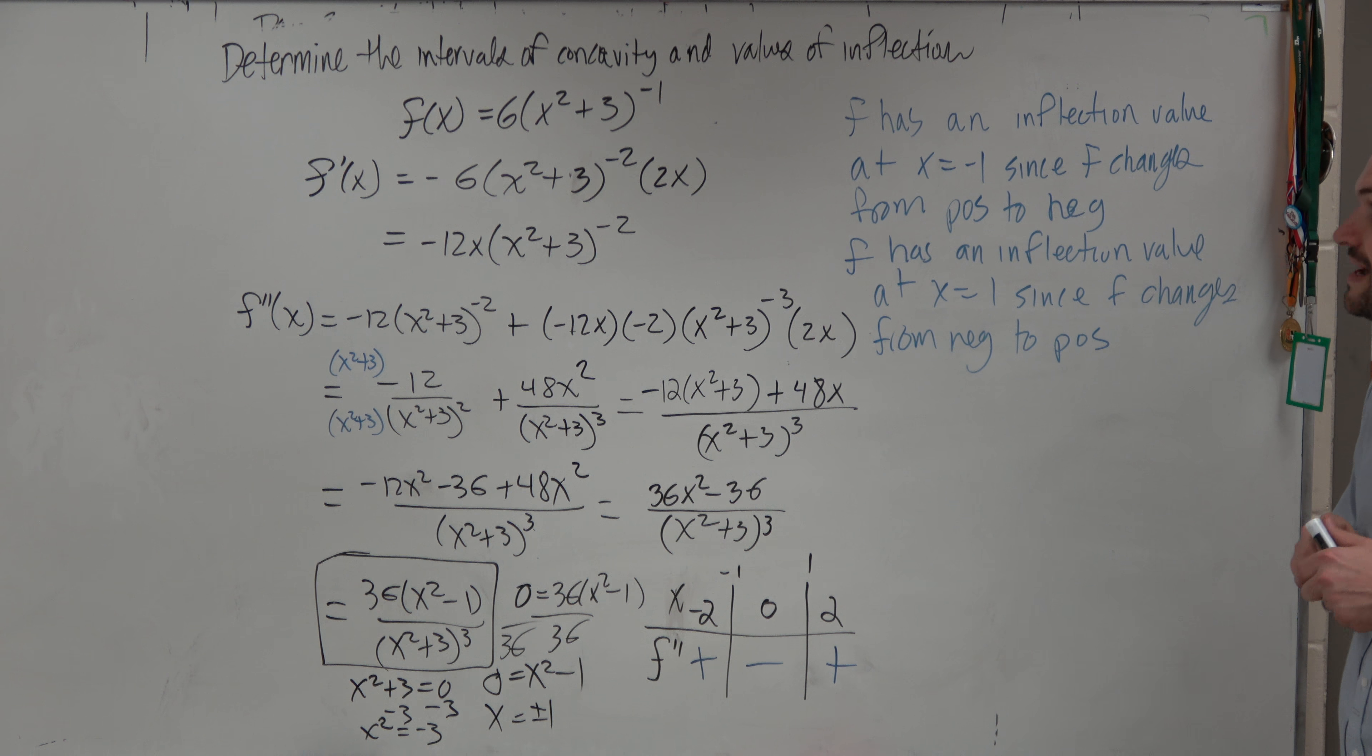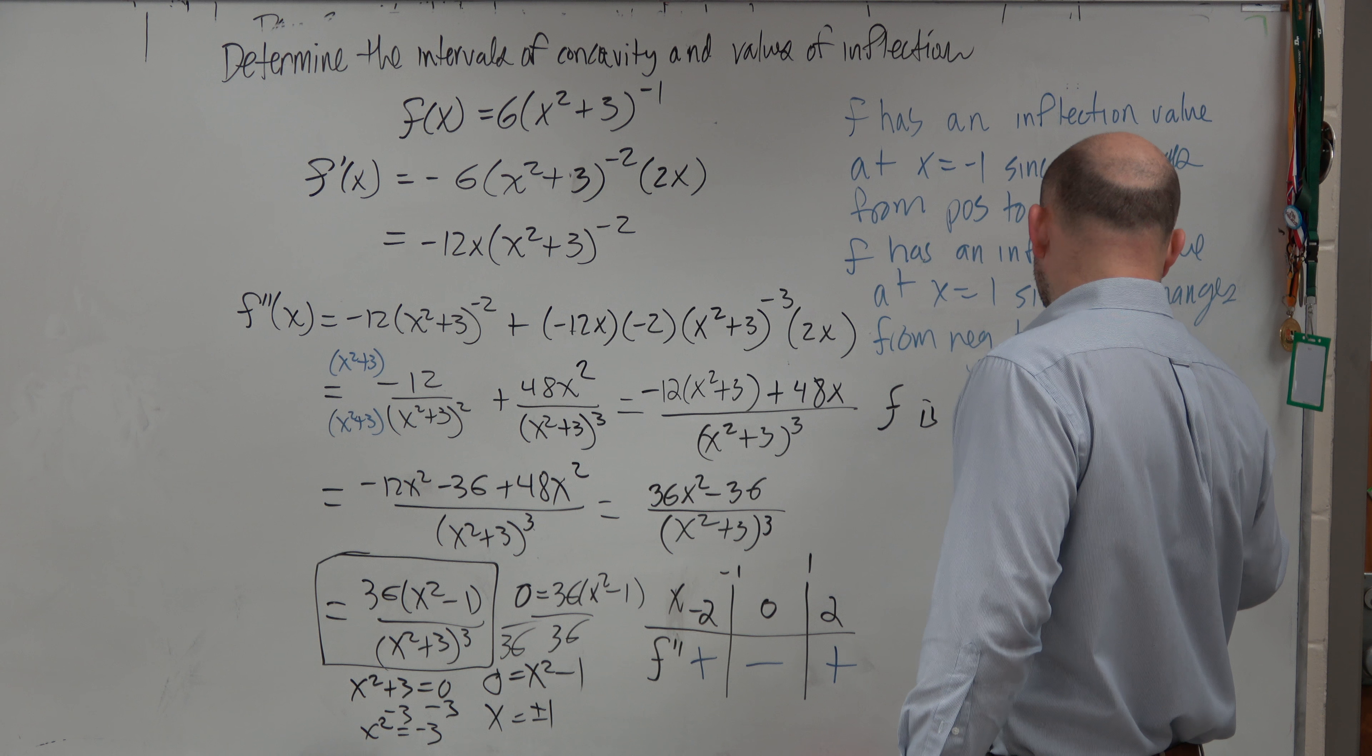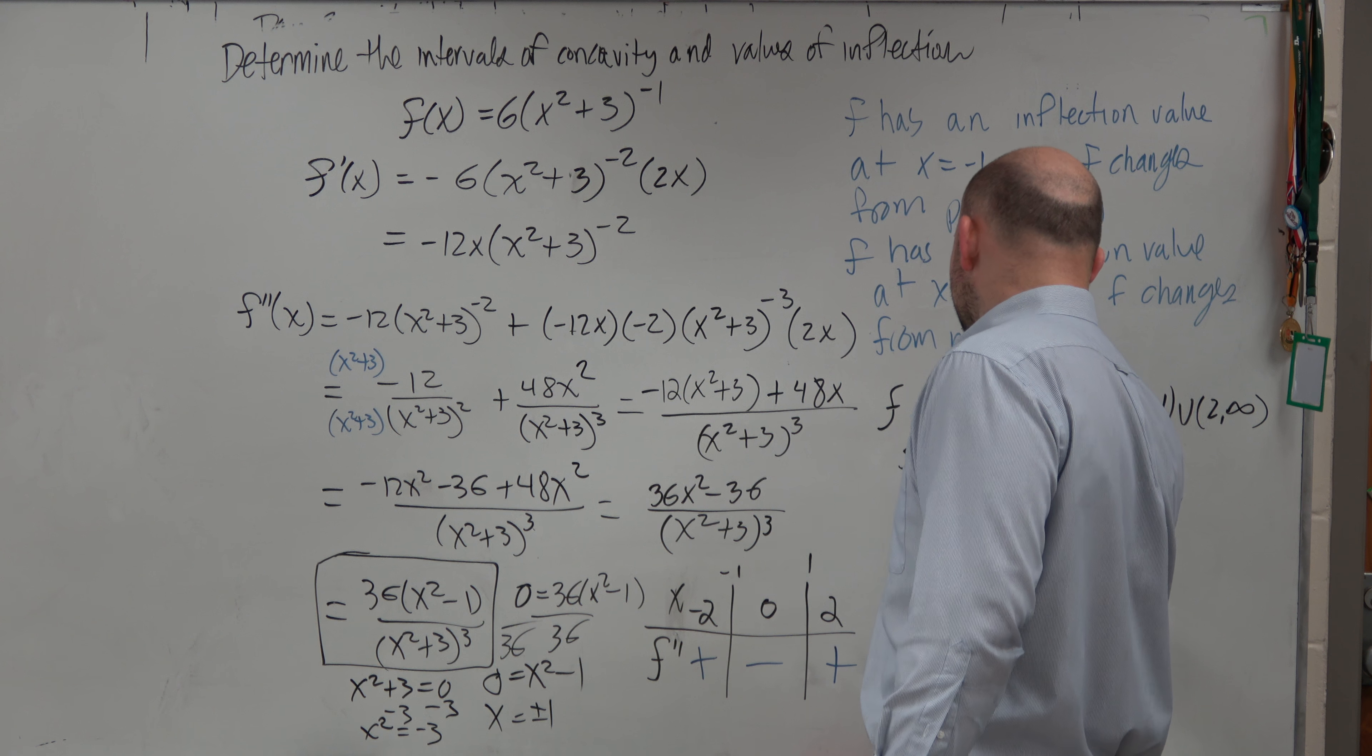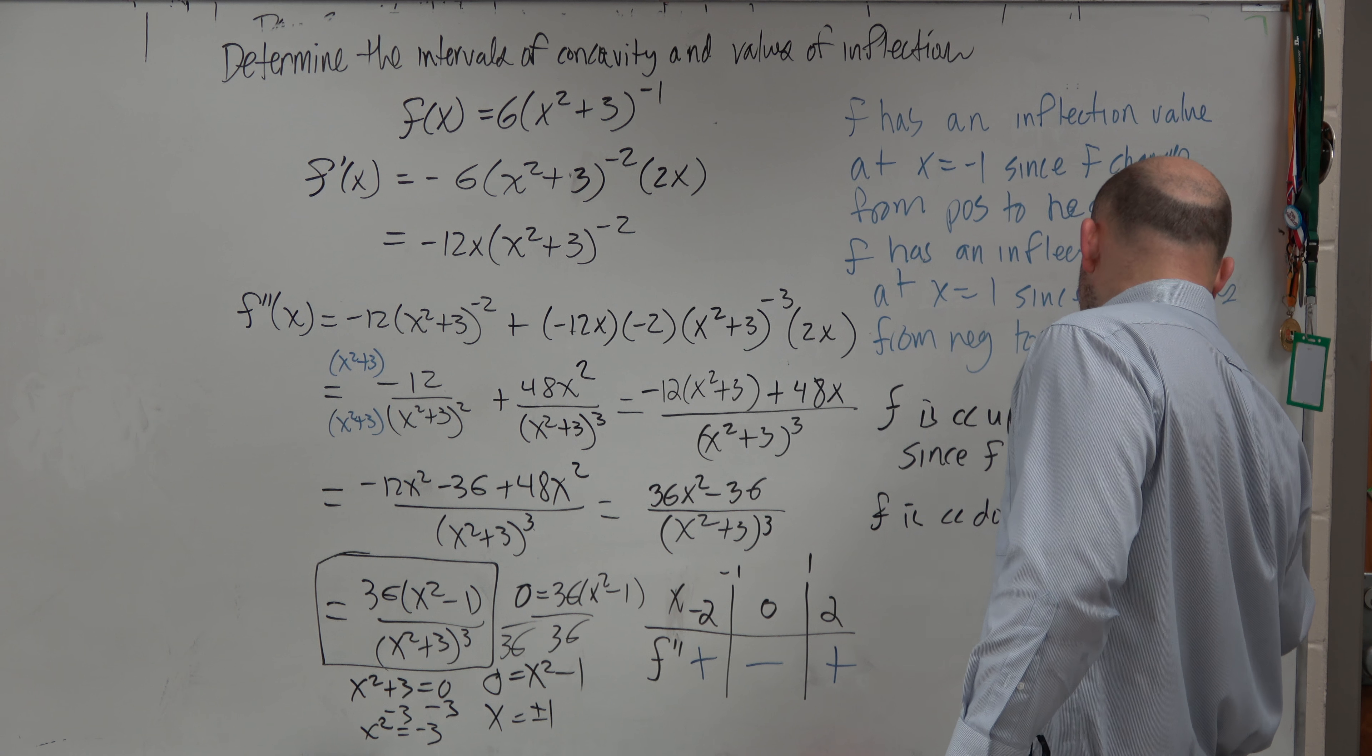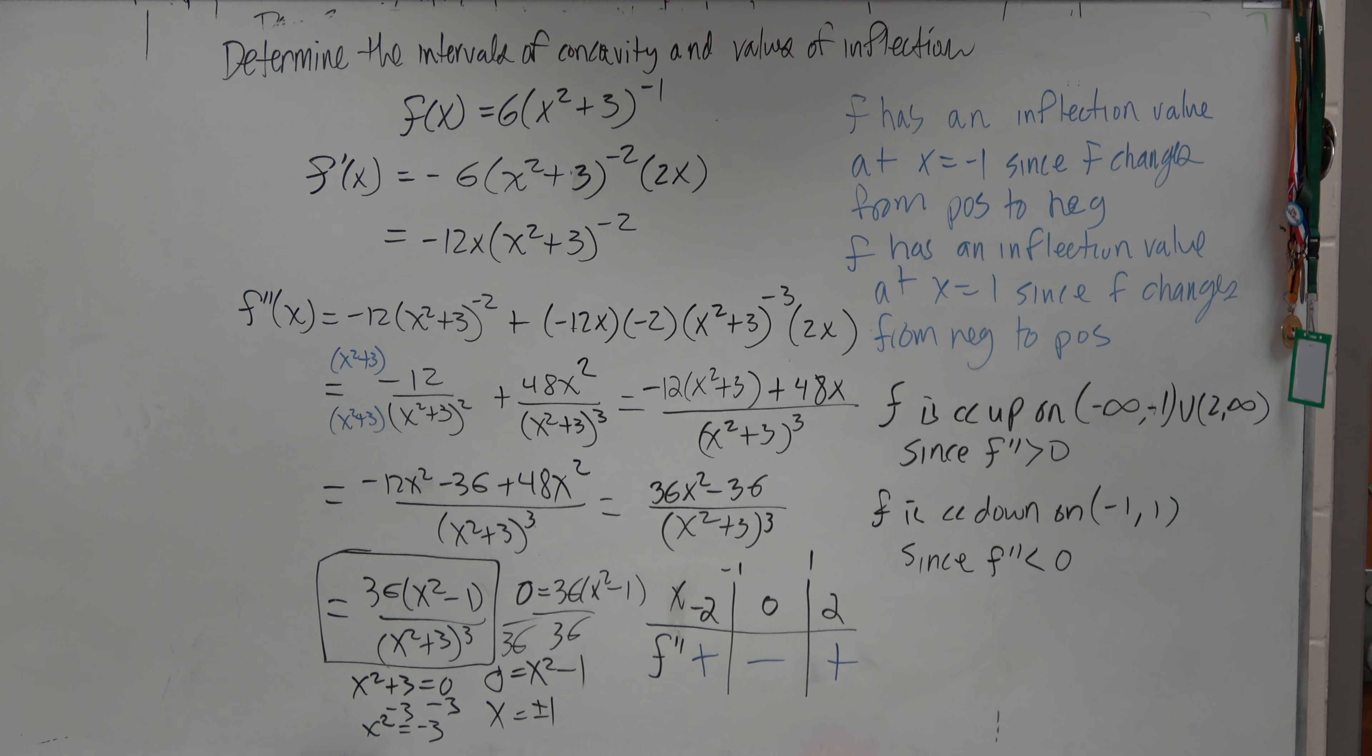Then, if we want to go ahead and find the intervals of concavity, we don't have any closed intervals. So we know that we could say that f is concave up on the interval negative infinity to negative 1, union 1 to infinity, since f double prime is greater than 0. And we could say f is concave down on the interval negative 1 to 1, since f double prime is less than 0.